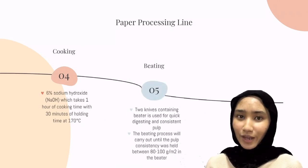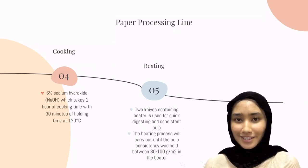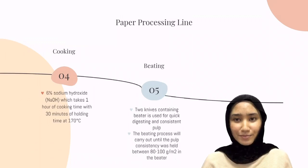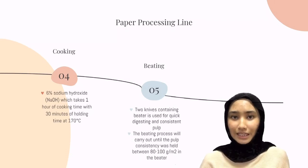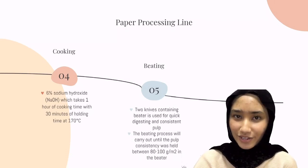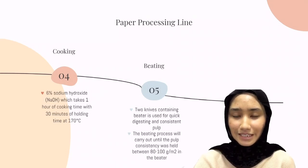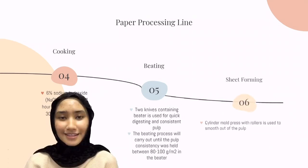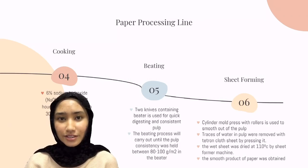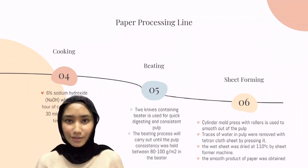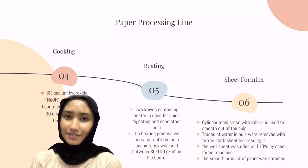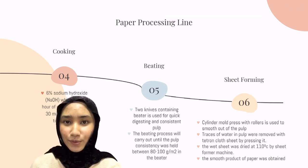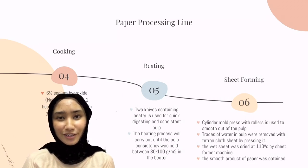In the beating process, 2 knives are used in a beater for quick digesting and consistent pulp. The beating process is carried out until the pulp consistency is held between 80 to 100 grams per meter squared in the beater. For good quality strength in paper production, 1% of sodium silicate is mixed in the beater. Lastly, a cylinder mould press with rollers is used to smooth out the pulp. The traces of water in the pulp are removed with a deuron cloth sheet by pressing it, and then the wet sheet is dried at 110 degrees Celsius by a sheet former machine. Finally, the smooth product of paper is obtained.